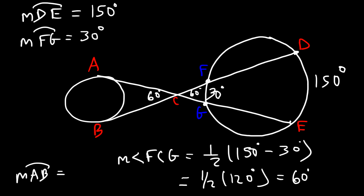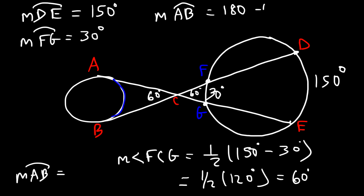Now we can use the tangent-tangent angle theorem to get the measure of arc AB. Remember, the arc plus this angle has to add up to 180. So the measure of arc AB is 180 minus 60, which is 120 degrees.